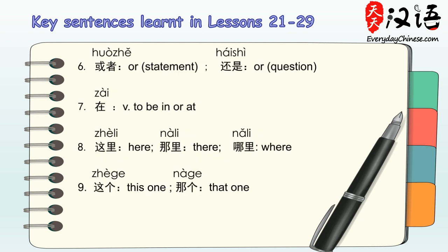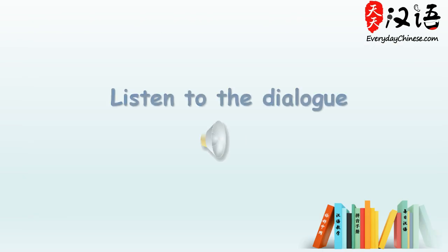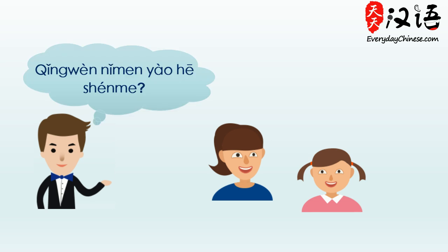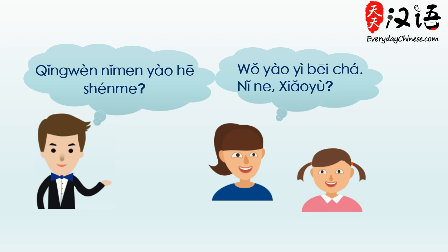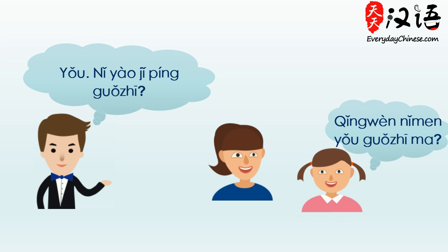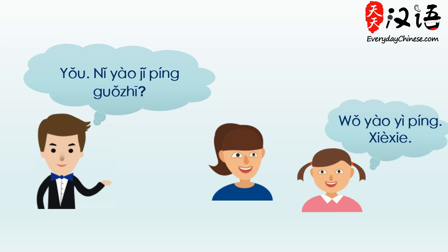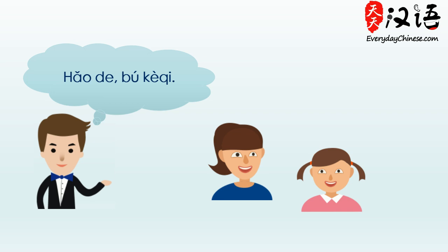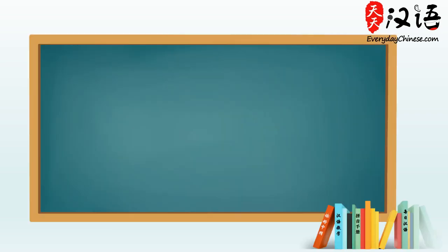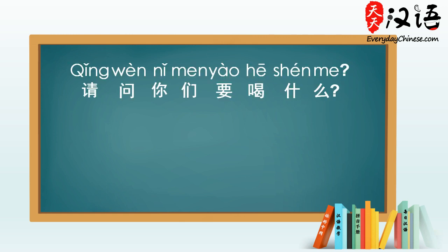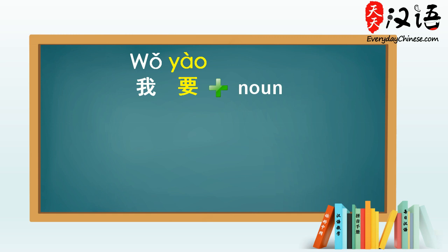First, listen carefully to today's first dialogue. Now let's go through sentence by sentence. The waiter started the conversation by asking 请问你们要喝什么? In lesson 23, we learned a verb to ask for something — that is 要. You can use 我要 plus the thing that you want.